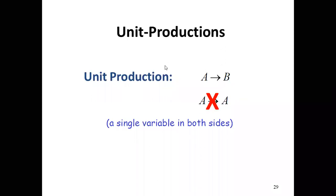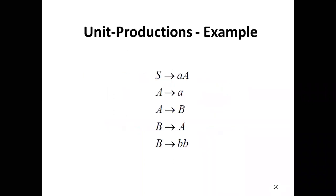I have taken an example. In this example, first we need to find out what are the unit productions. A to B is a unit production, and B to A is another unit production. Our aim is to remove these unit productions from our production set.